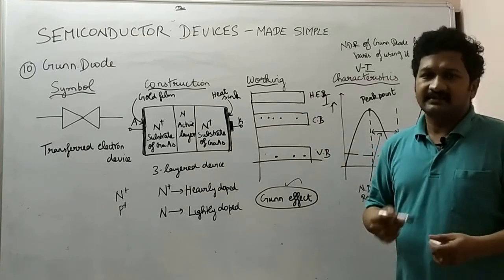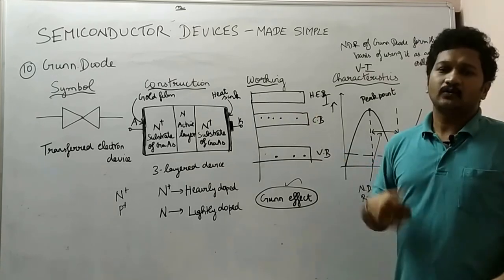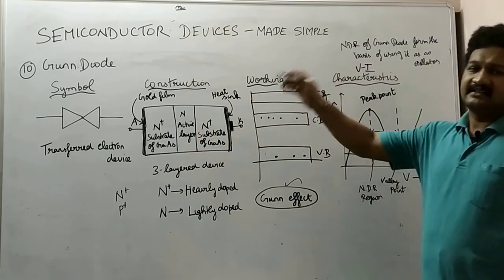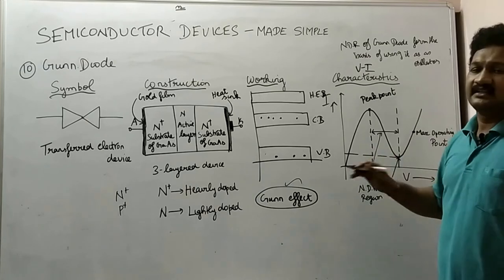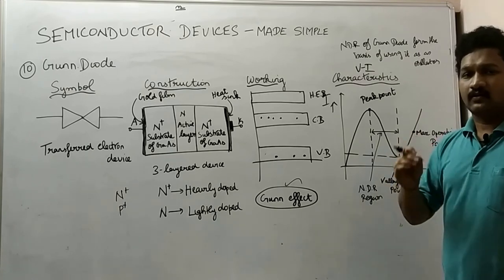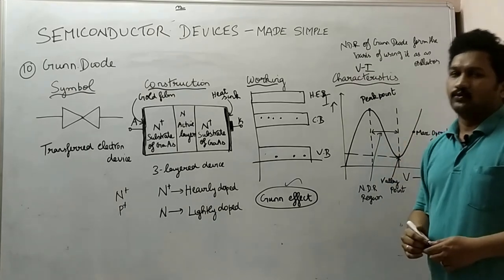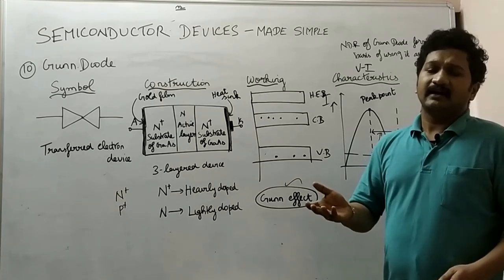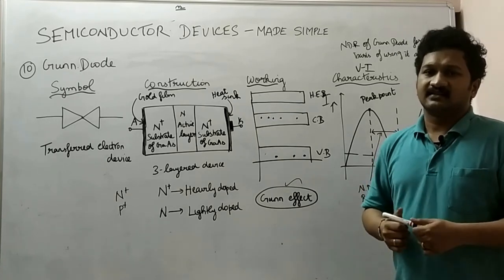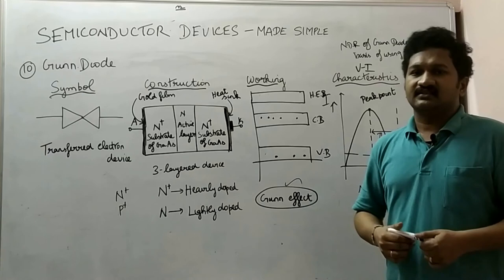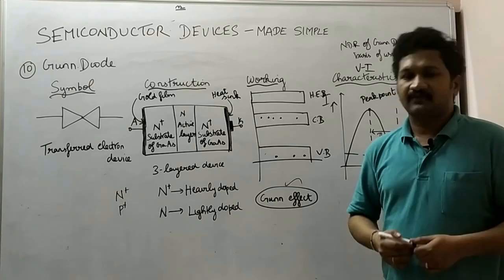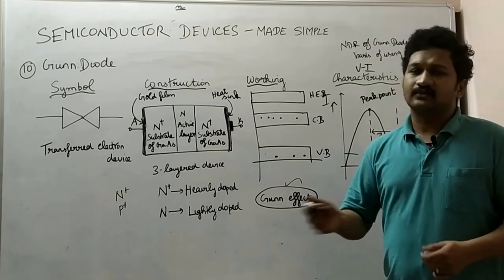If you have any doubts you can post them in the comment section. The V-I characteristics graph is very important — if you understand the V-I characteristics it means you have understood the entire working concept of the diode. Thank you. In the upcoming lectures we will see about three-terminal devices, which are transistors: bipolar transistors, unijunction transistors, and field effect transistors of different types.